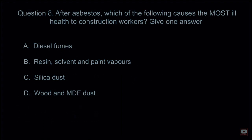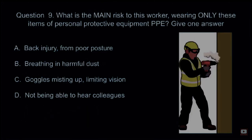Question 8: After asbestos, which of the following causes the most ill health to construction workers? Give one answer. A: Diesel fumes. B: Resin, solvent, and paint vapors. C: Silica dust. D: Wood and MDF dust. The correct answer is C: Silica dust.